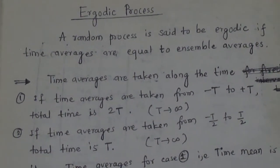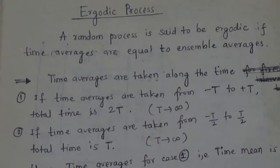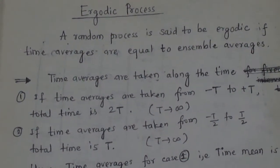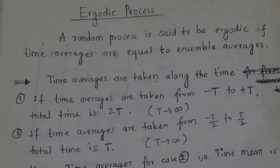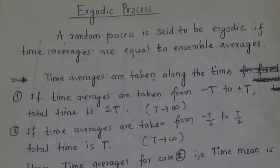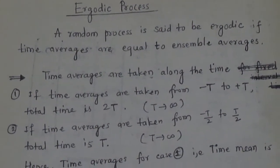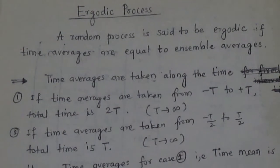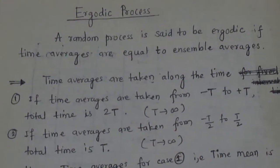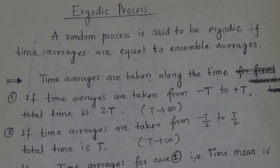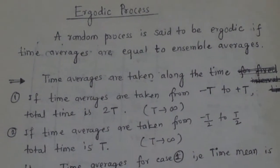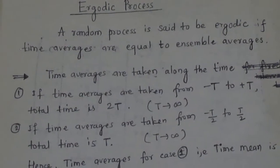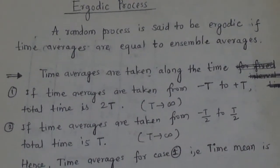We have seen the classification of random process. A process is said to be ergodic in nature if time averages are equal to ensemble averages. A random process is said to be ergodic if time averages are equal to ensemble averages.